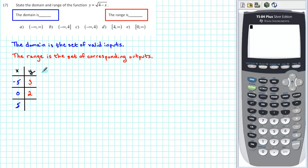Now let's check 5. When we substitute 5 for x, we get 4 minus 5 is negative 1. But the square root of negative 1 is not a real number. It's imaginary. Therefore, 5 is not in the domain of the function.